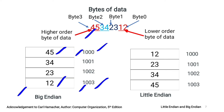If 4 bytes of the given word are stored in this manner in memory, that is called Big Endian. In the second figure, using the same 4 memory locations, the lower order byte of data is stored at the lower order address, and the higher order byte of data is stored at the higher order addressed memory location. This kind of ordering of data in memory is called Little Endian.